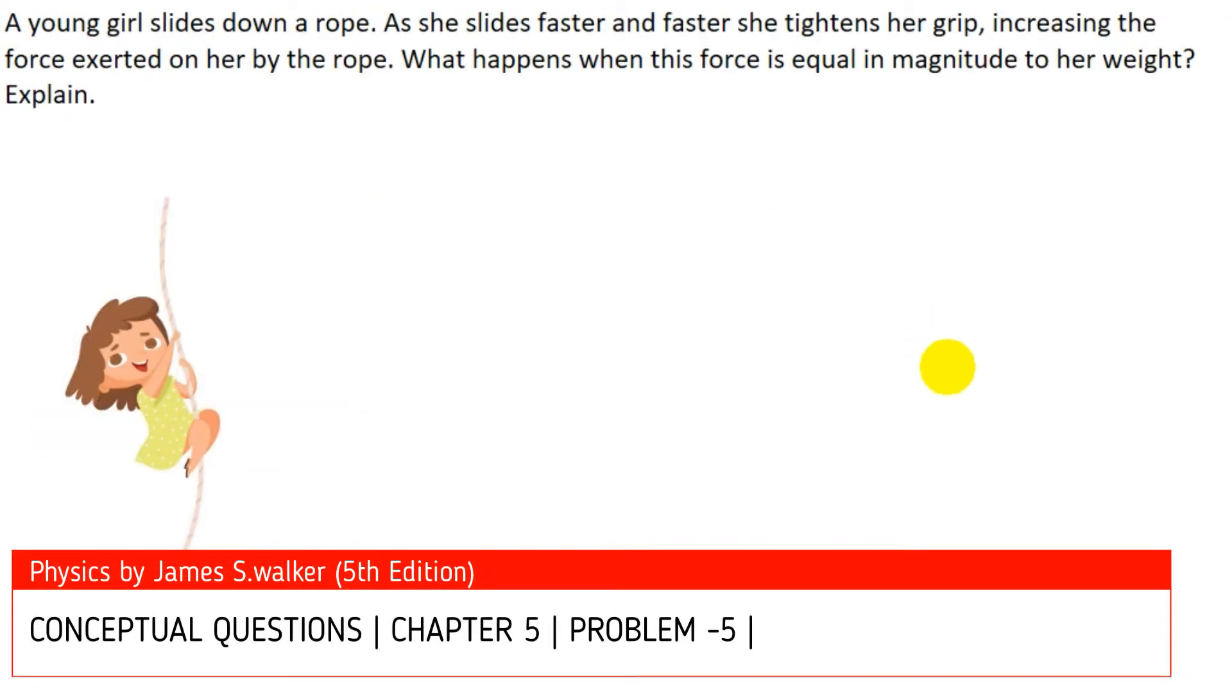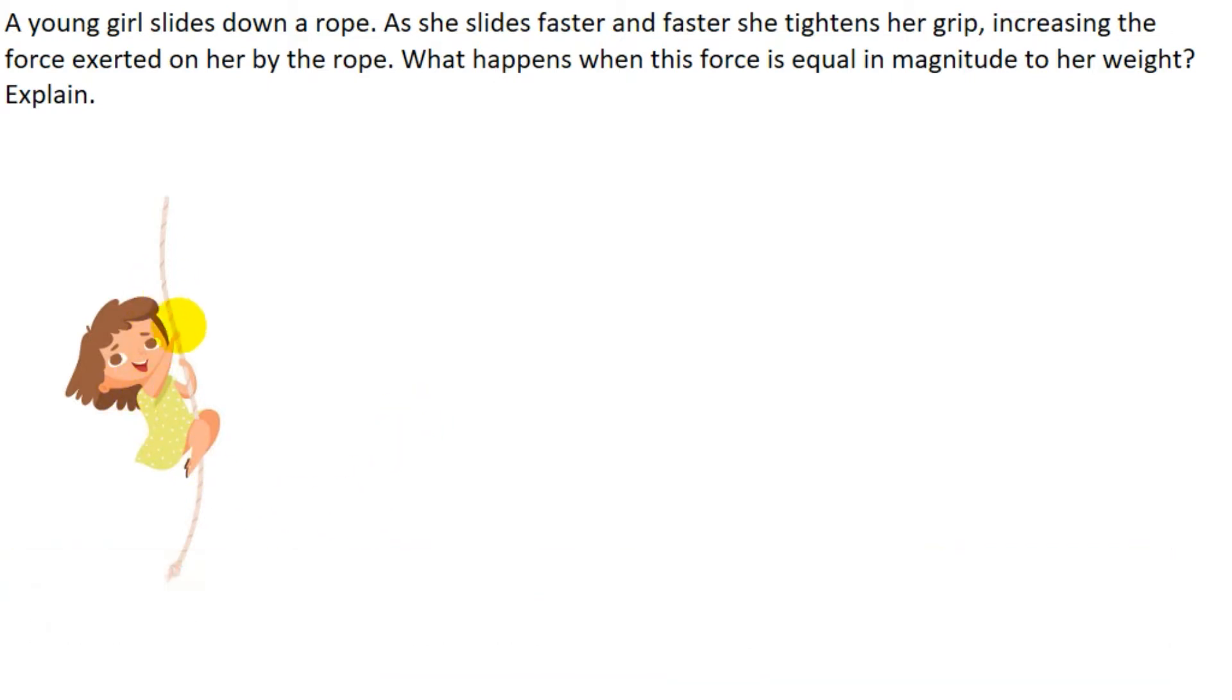In this question, a young girl slides down a rope. As she slides faster and faster, she tightens her grip, increasing the force exerted on her by the rope. We need to determine what happens when this force equals the magnitude of her weight.